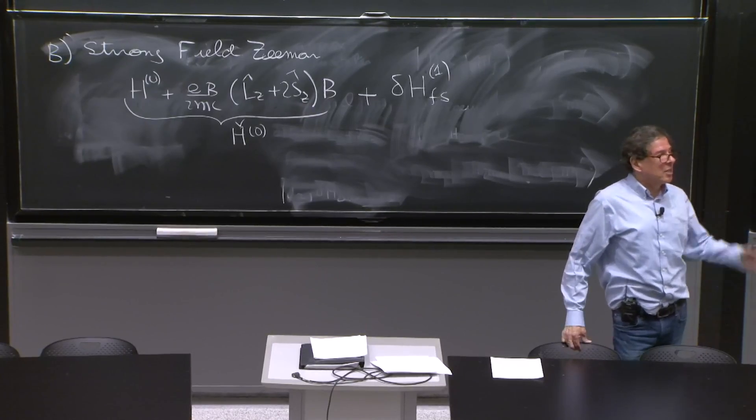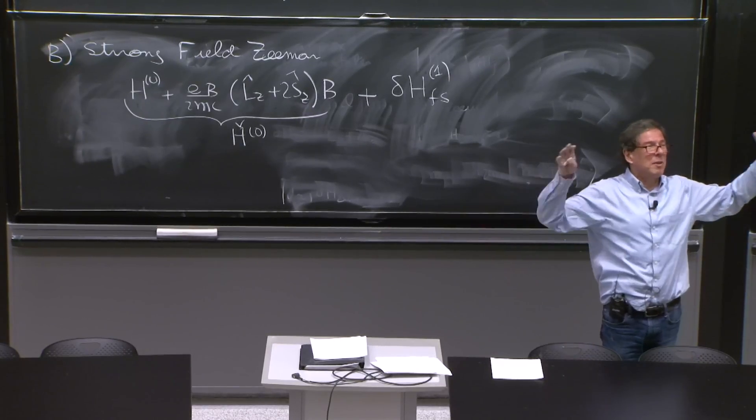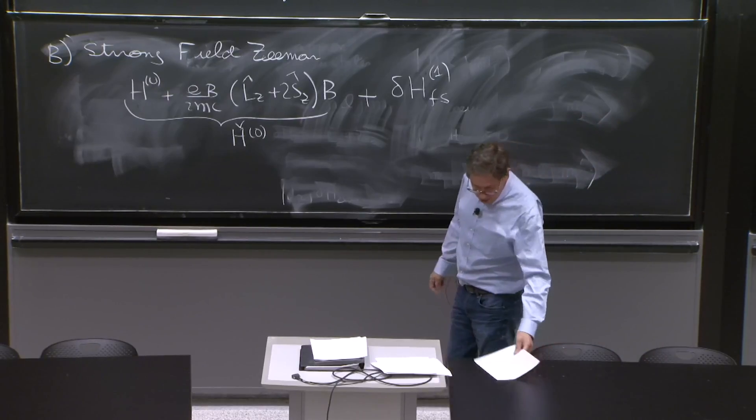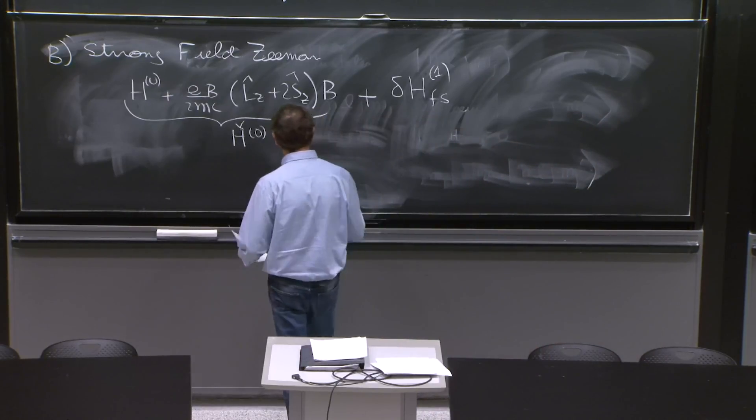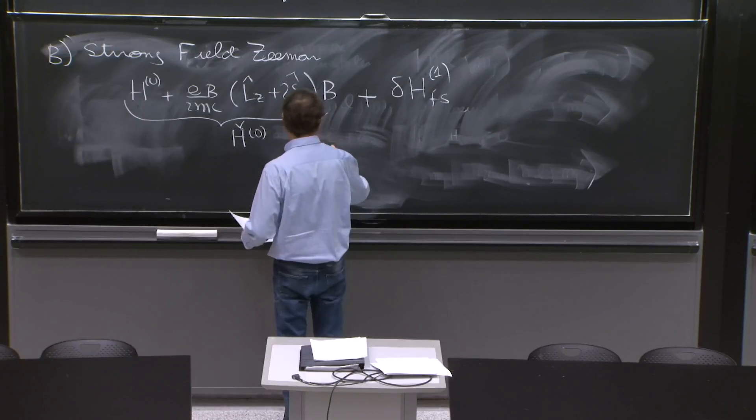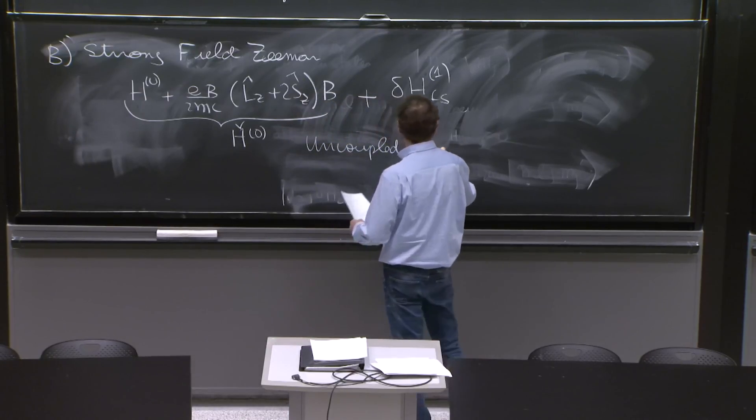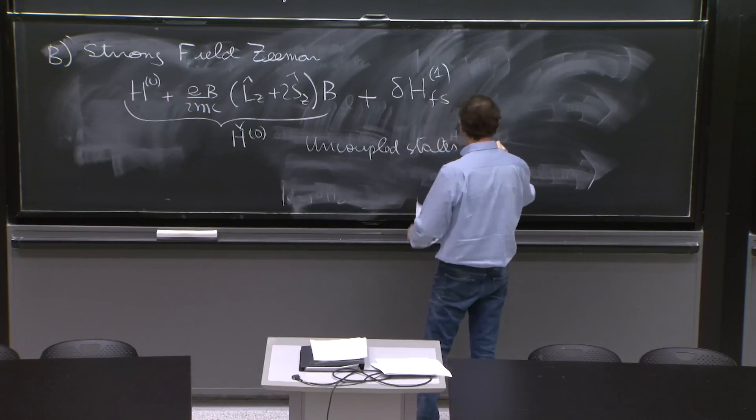So it's possible that you can diagonalize this completely. Simultaneous eigenstates of the first part and the second part, simultaneous eigenstates from all of those. But the news is even better. Your uncoupled states.